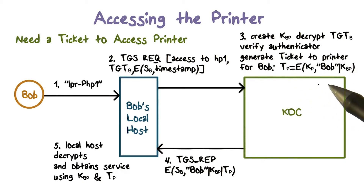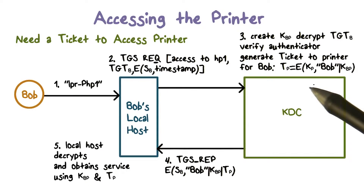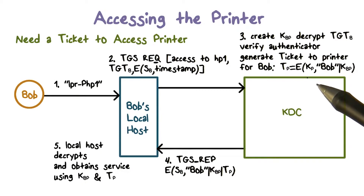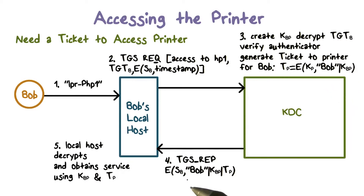Note that a network device such as a printer has a long and random master key that is configured in and is typically hard to guess or crack. Therefore, the tickets for these devices are encrypted using their master keys. The KDC sends a ticket-granting service response to Bob's local host.